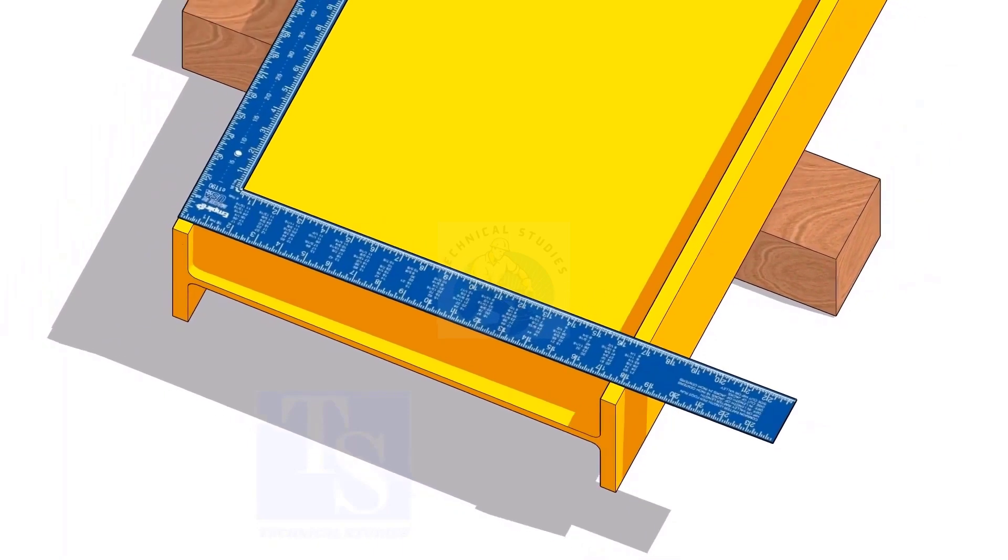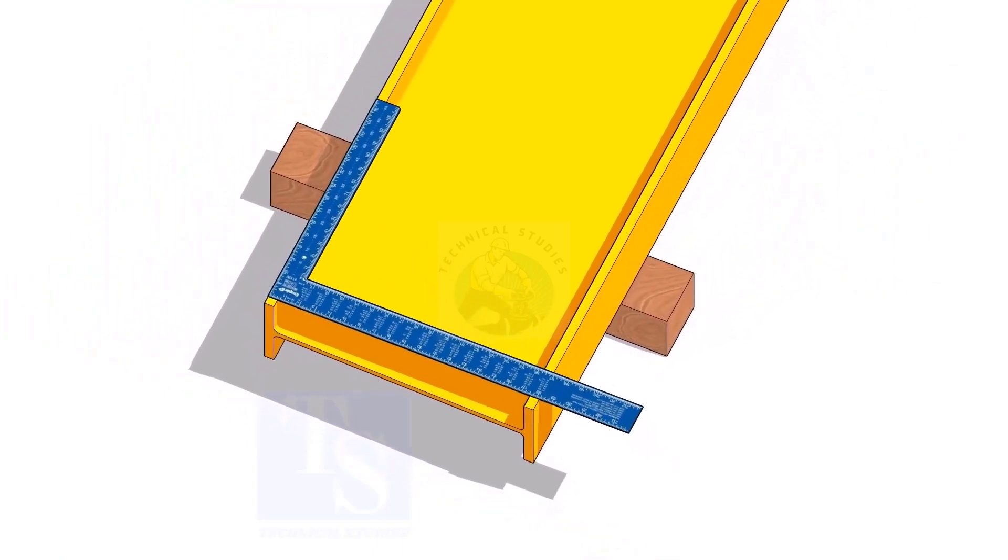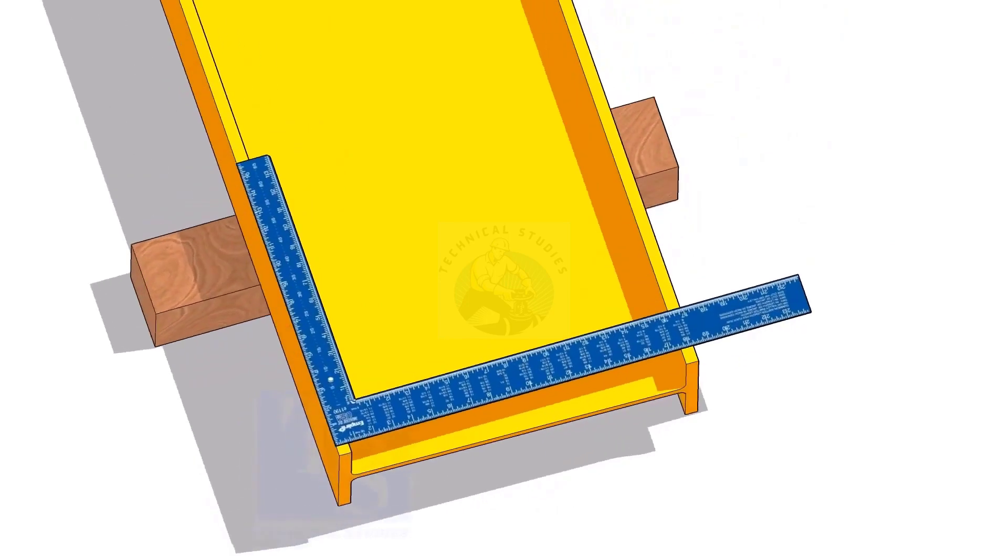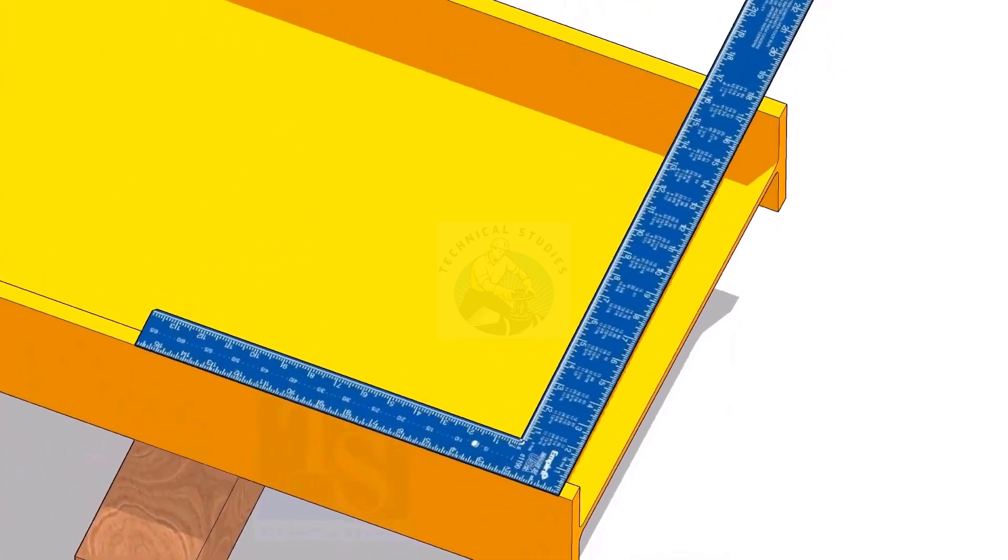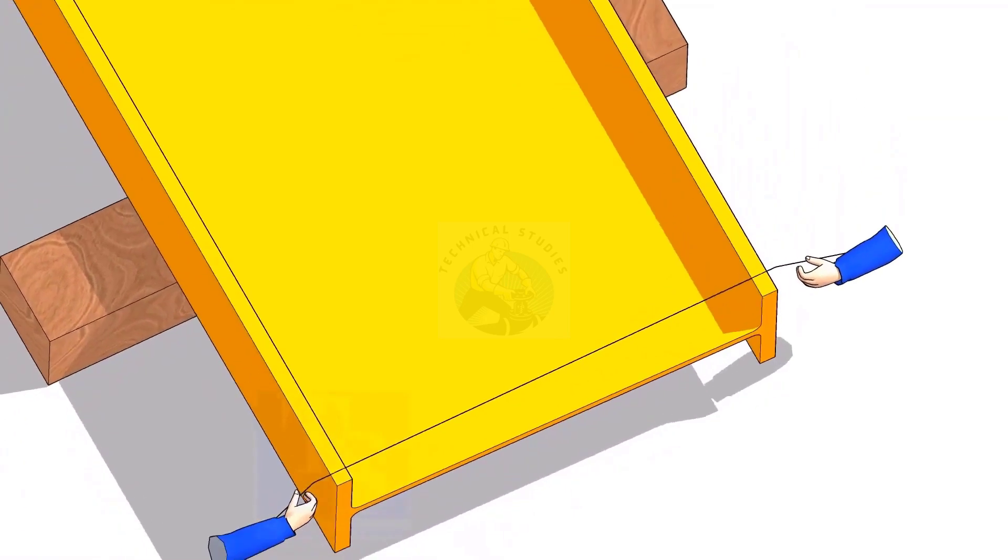Cross check the squareness of the marks from the other edge of the beam. Hold a line string on these marks as shown.